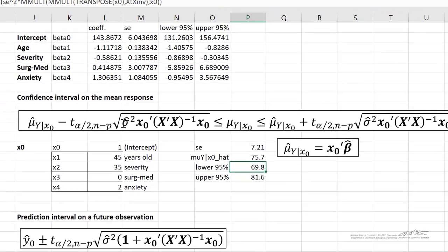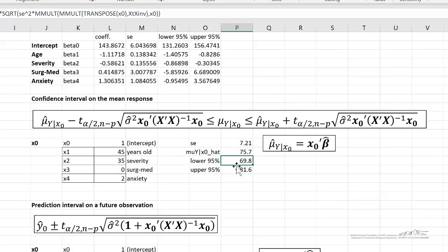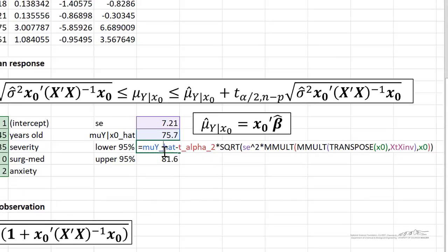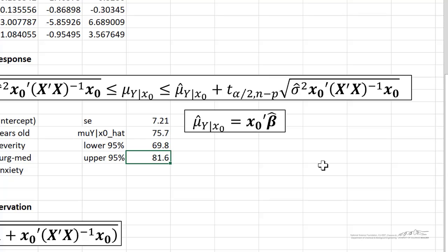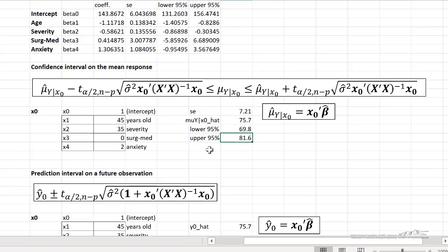Then we can use that in this confidence interval equation. And this is where it gets a little bit messy. I'm using MMULT a couple of times. I'm using transpose. You can pause this and look at this or you can download the file to see how I've done this. But it takes a while again to put this together. So just take your time. But that's our lower 95% confidence interval. And we can do something similar by just adding that half interval for the upper 95% confidence interval on the mean response.